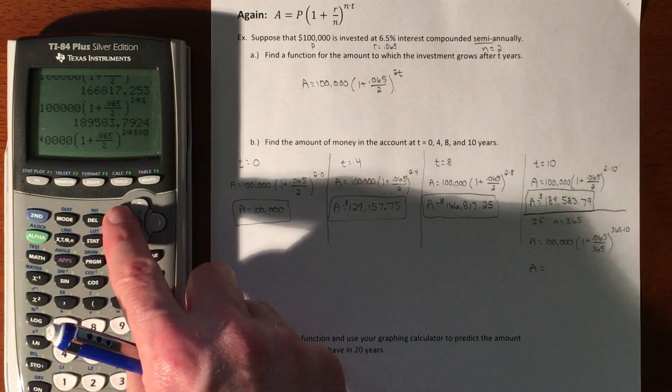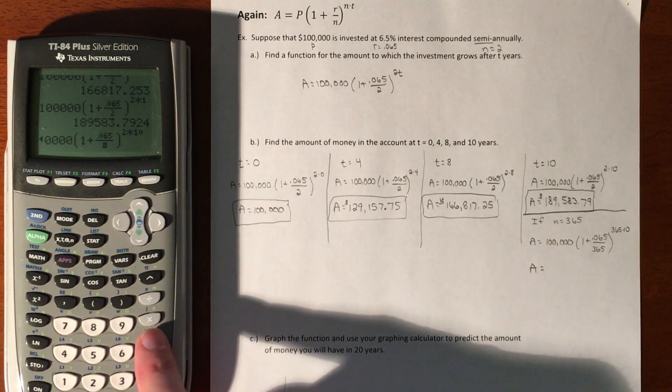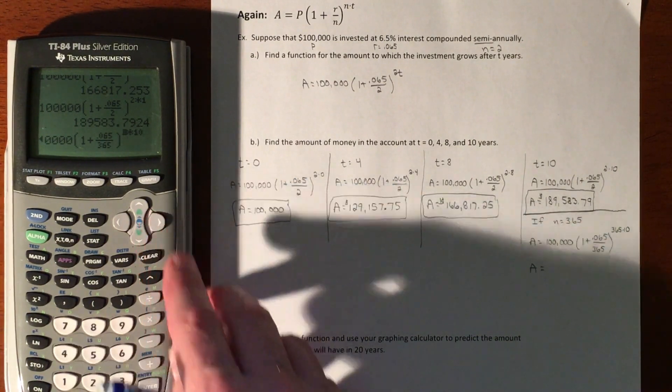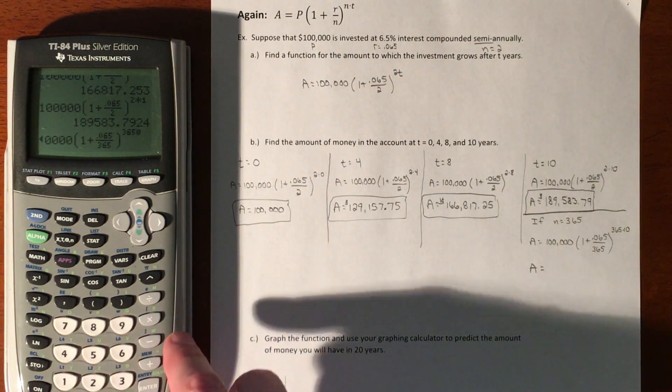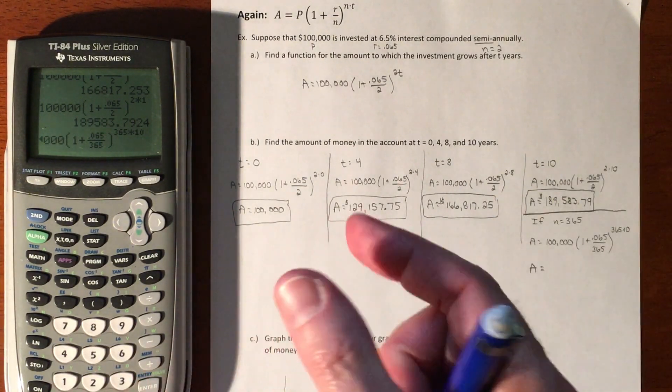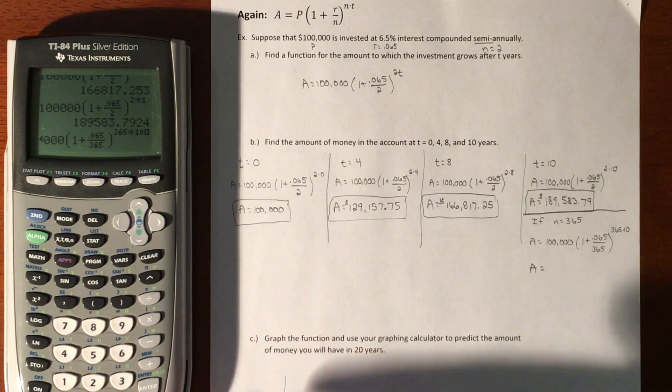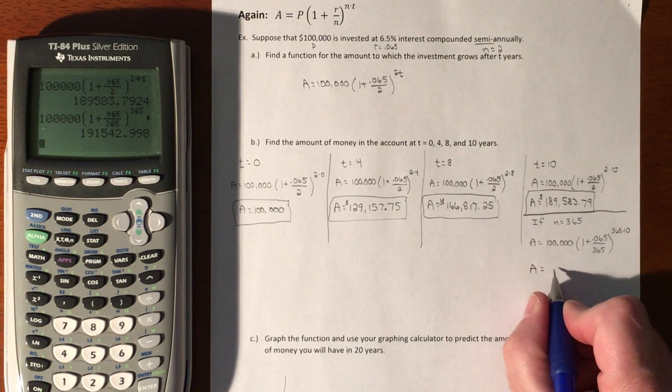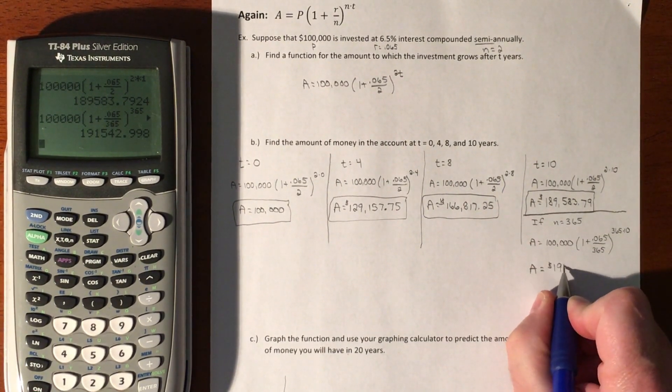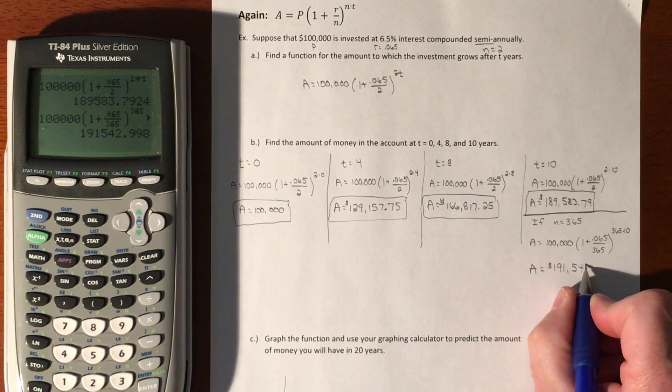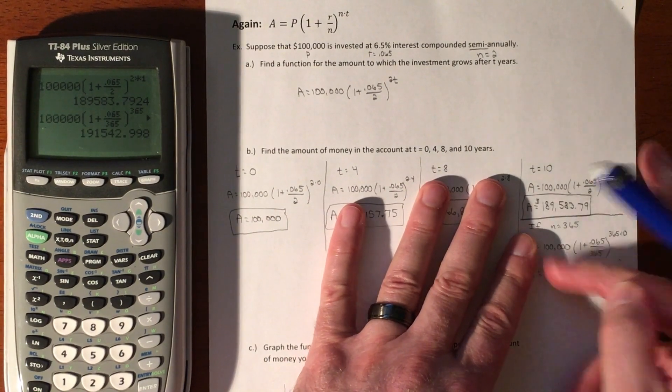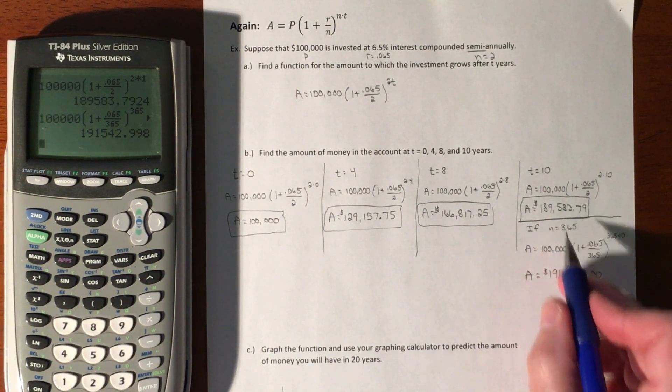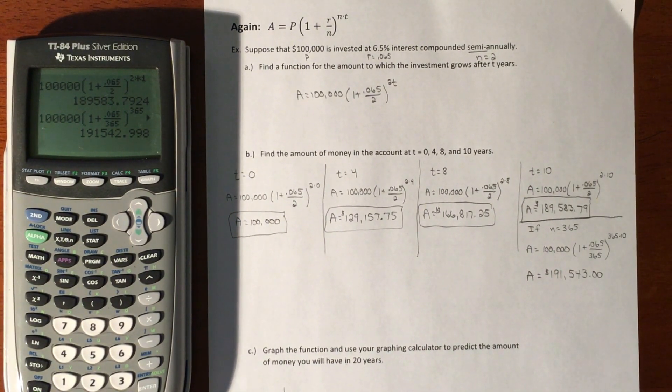We're going to highlight this and change a couple things. It's not the amount of time, it's how often we're compounding. Our denominator is going to be 365, and our power is going to be 365 times 10. We're going to take all these little tiny bits of interest and compound it every single day for 10 years. Let's see what difference it makes: $189,000 turns into $191,543.